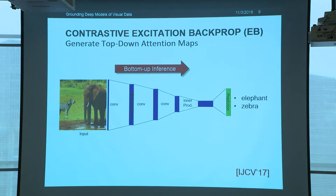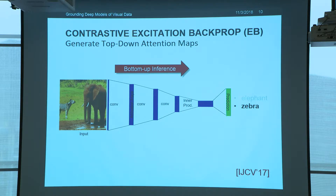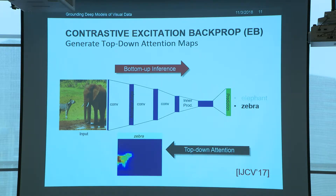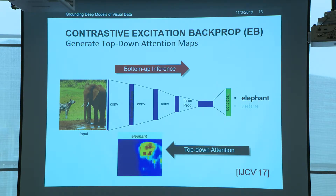Let's take a look at an input image and take a sample of what we call grounding. This input image has a zebra and an elephant. What we can do with spatial grounding techniques is ask the network, why would you classify this as a zebra? And this is an example output. And why would you classify this image as an elephant? This is sample output. So this is a discriminative highlight of why a network would make a specific decision for an image.